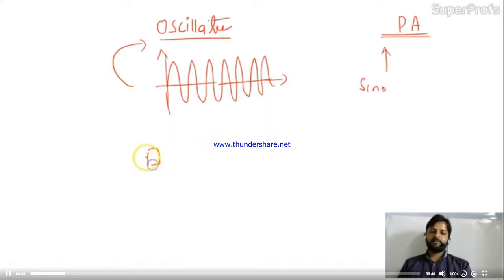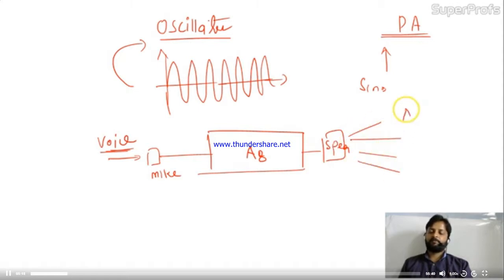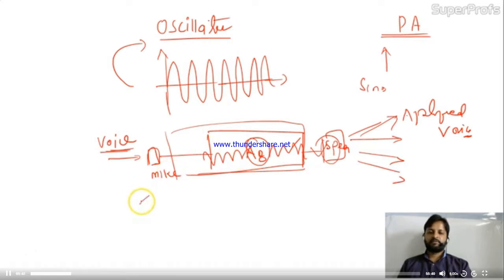Consider a microphone and speaker. The mic is at the input stage; voice is given as input. The mic converts voice into an electrical signal, which is amplified internally, and at the output we get an amplified voice through the speaker. The mic converts voice to electrical signal, which is then amplified. The speaker enlarges the input. We are amplifying the power of the signal — that is why we call it a power amplifier.